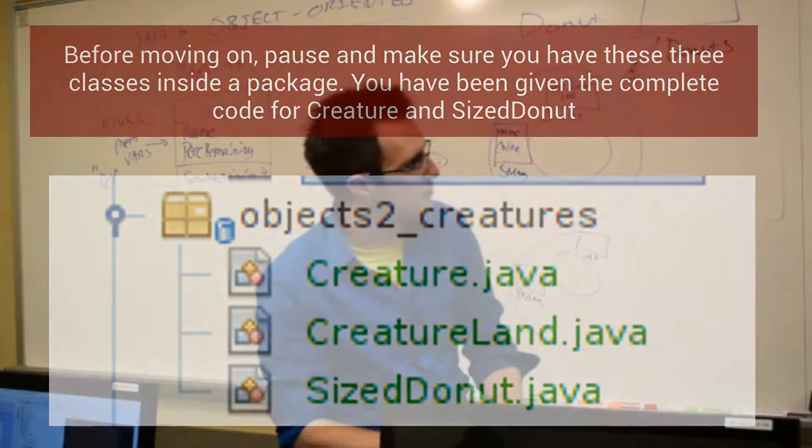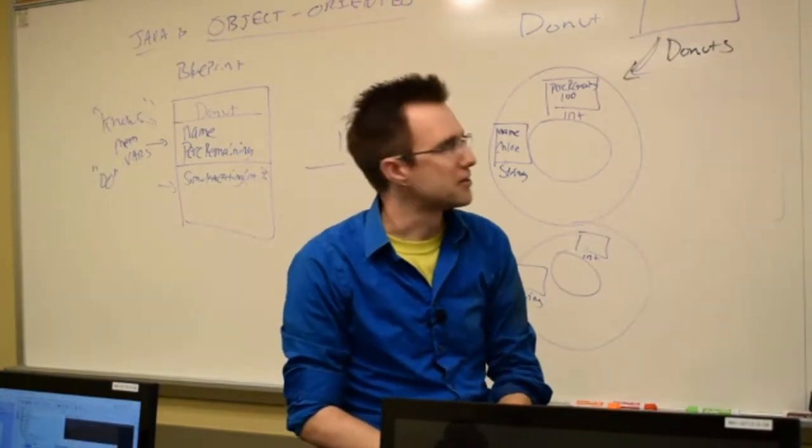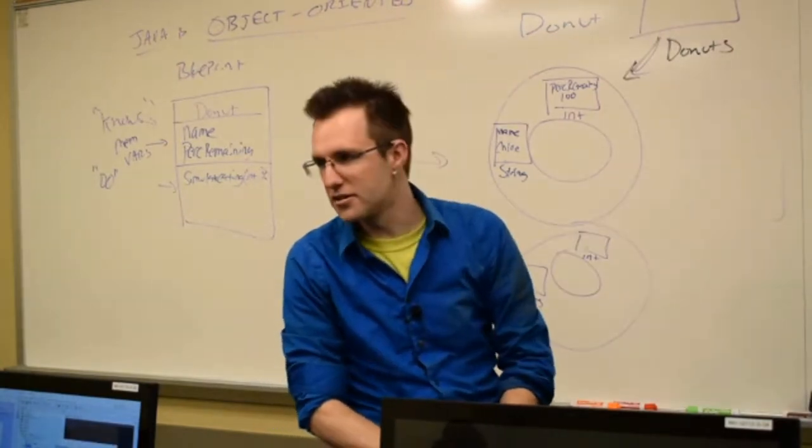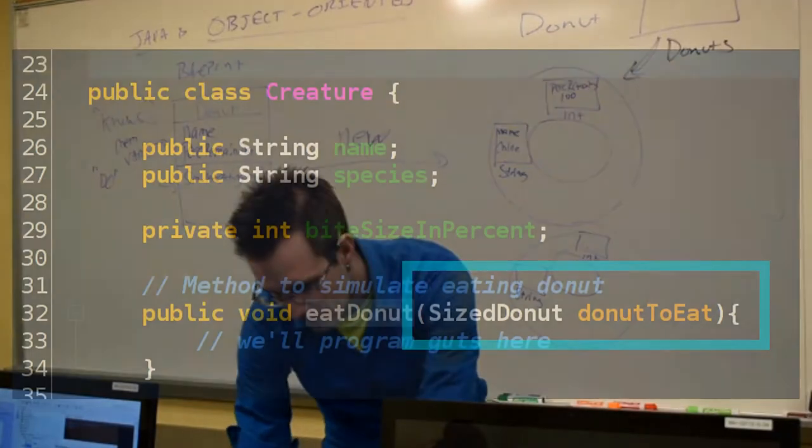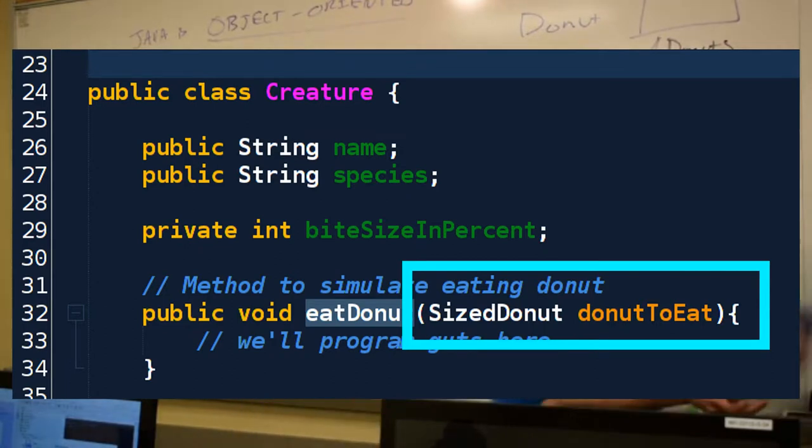based on what we think should happen in those methods. So once you've got this coded up, we will come back together and we will code up some of the guts because we want to be able to feed a donut to a creature.